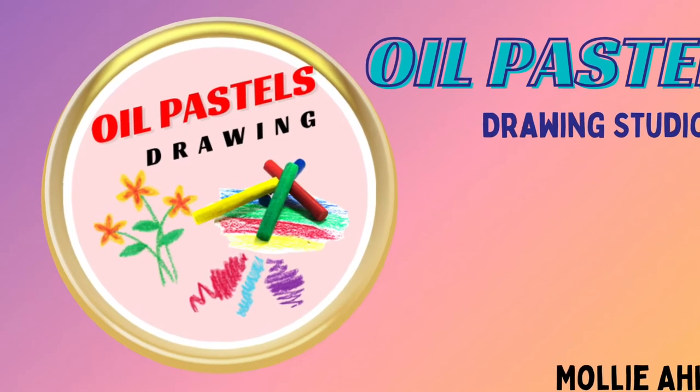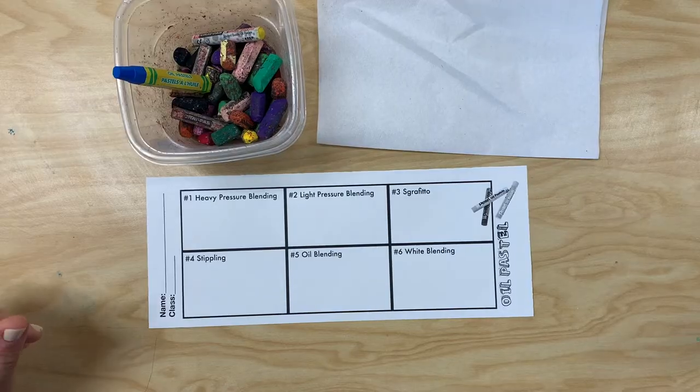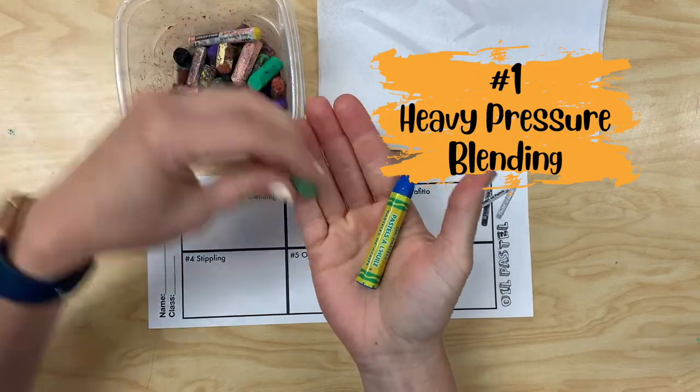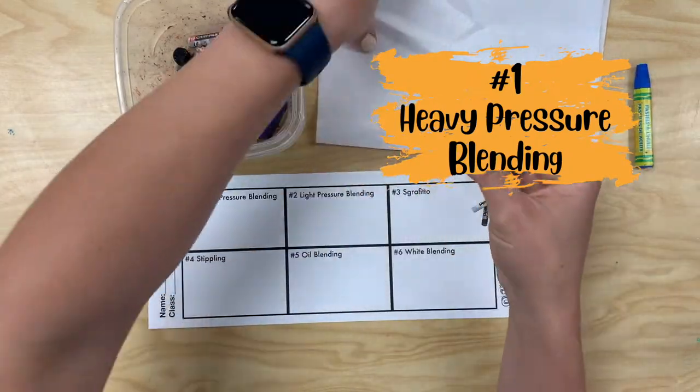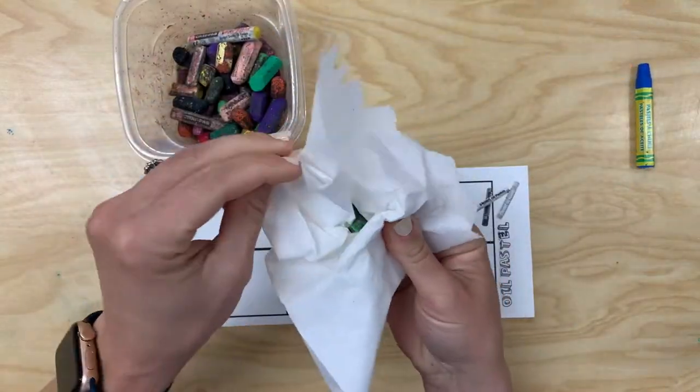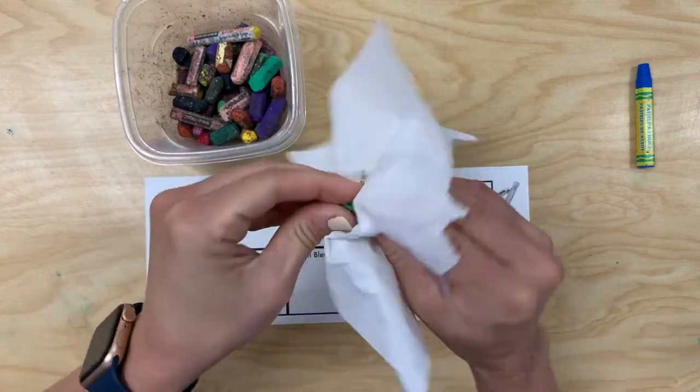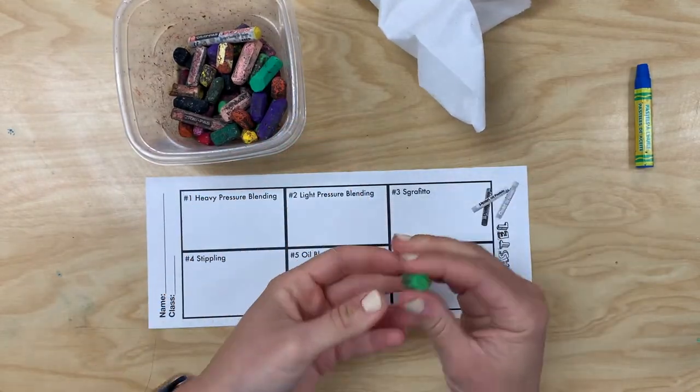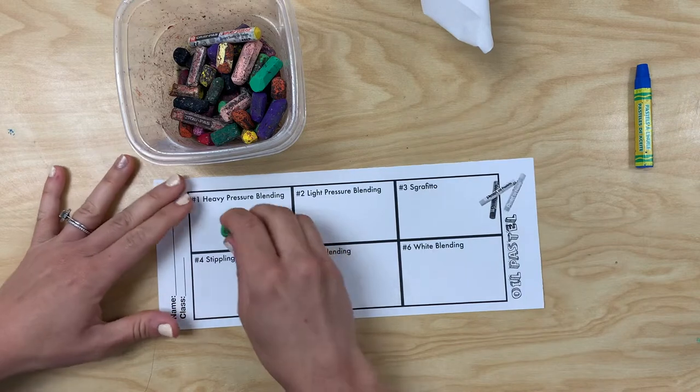In this video you will learn six different techniques for using oil pastels. The first one will be heavy pressure blending. You can always clean your oil pastels using a paper towel. This will help remove any unwanted color.